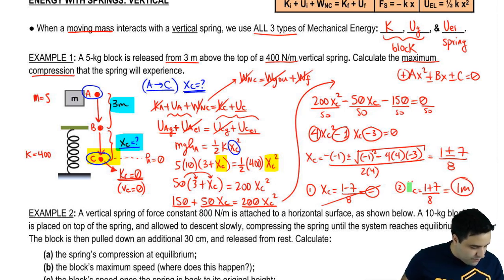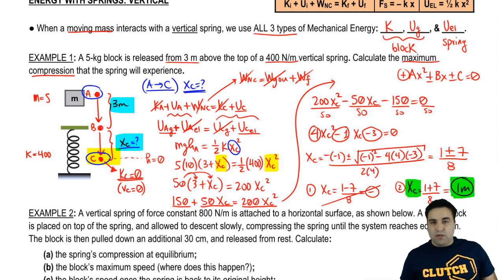So the total compression, the maximum compression, is exactly 1 meter. Let's do the other one now.